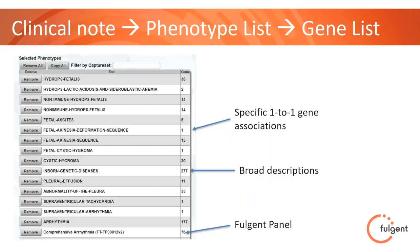We have an in-house tool based on OMIM and gene ontology language where you can associate genes with conditions. Some categories are very broad — the inborn genetic diseases category has 277 genes — and some things are more specific. We also have the ability to add Fulgent panels. So if this patient had a cardiac arrhythmia, we can just add the entire cardiac arrhythmia panel to the gene list to make sure we spend the most time focused on genes within that list.